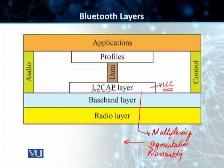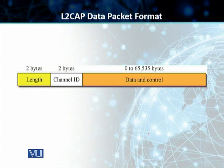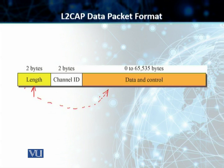You will also be introduced to the concept of quality of service, which is taken care of at this L2CAP layer. Regarding the L2CAP data packet format: we have a 16-bit length field — two bytes — that defines the length of the actual data being carried. We can have a maximum of 65,535 bytes in L2CAP data in Bluetooth technology. Then you have a channel ID field of 2 bytes (16 bits), which defines the unique identifier for the virtual channel created at this level for Bluetooth communication.